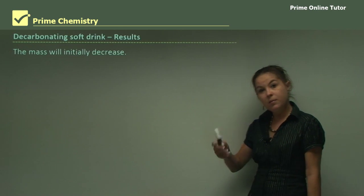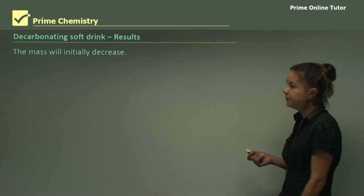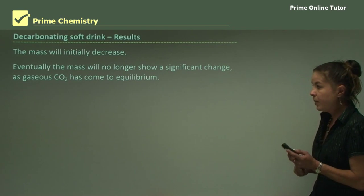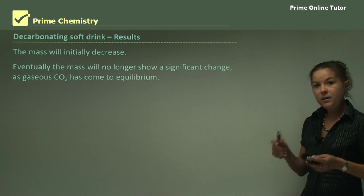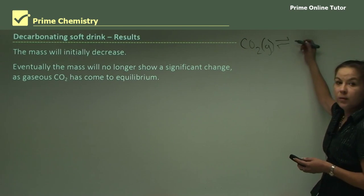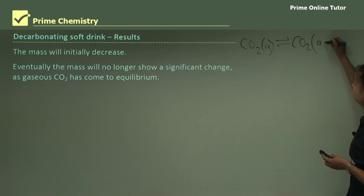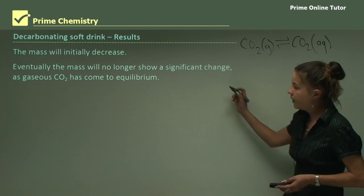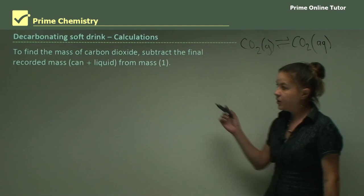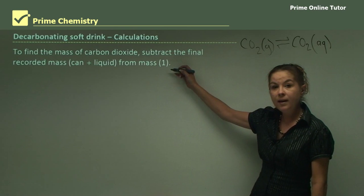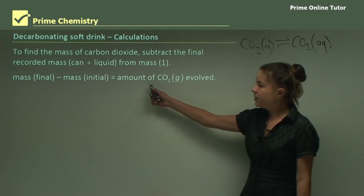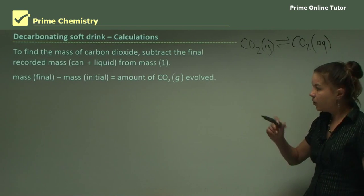As results, the mass will initially decrease because bubbles and fizz are coming out of the drink. Eventually the mass will no longer show a significant change because gaseous CO₂ will come to equilibrium - CO₂(g) in equilibrium with CO₂(aq). To find the mass of carbon dioxide, subtract the final recorded mass from Mass 1: mass final minus mass initial gives the amount of CO₂ gas that has been evolved after opening.